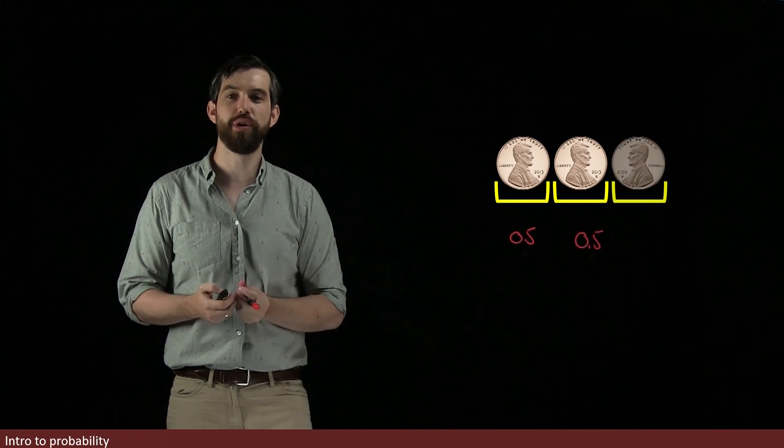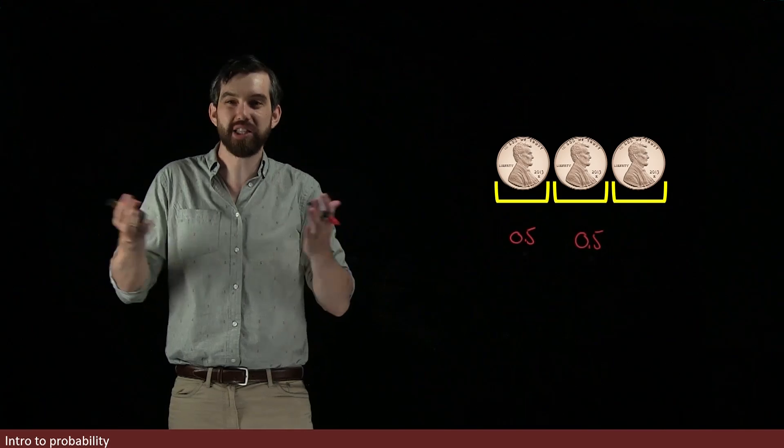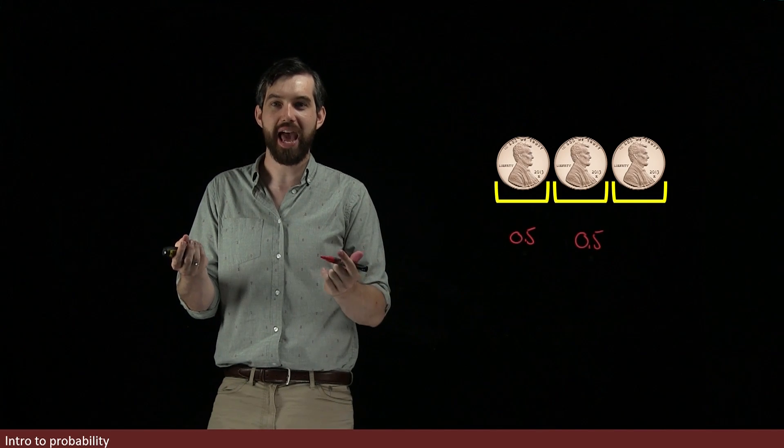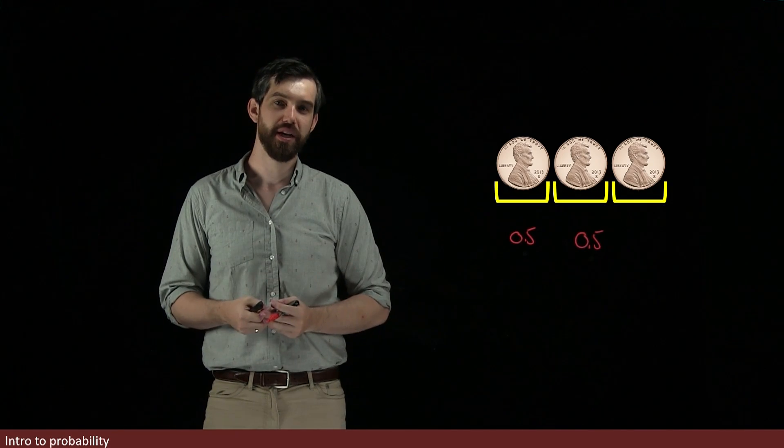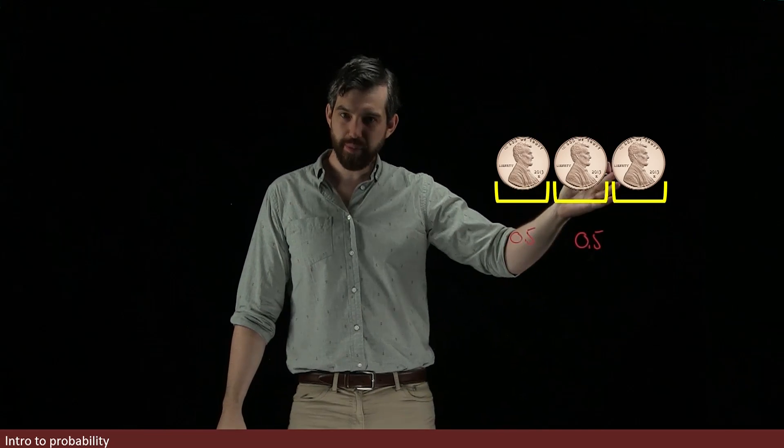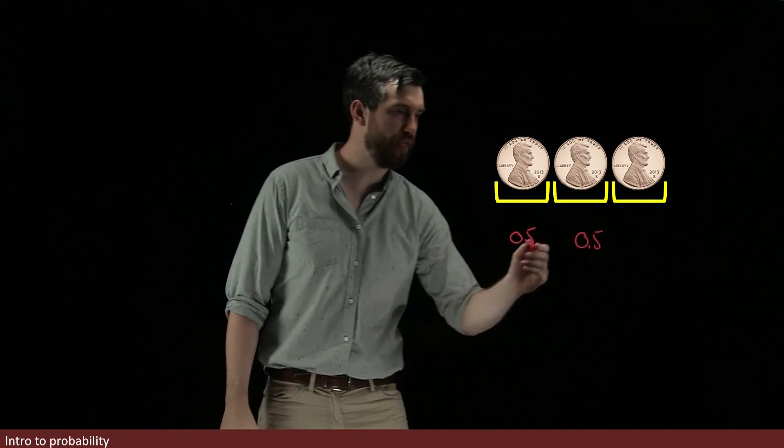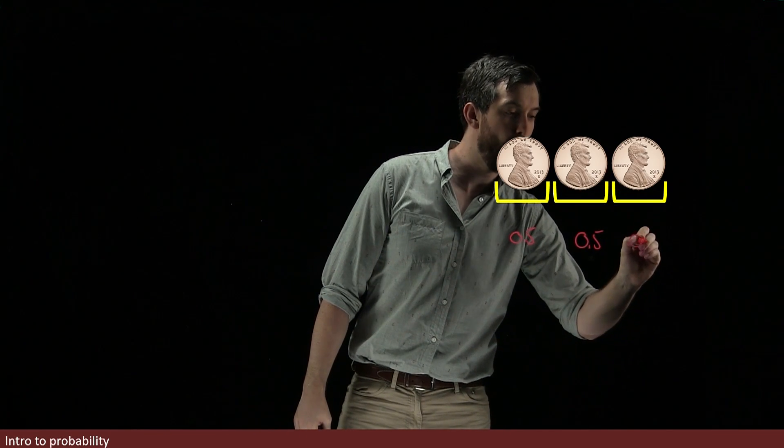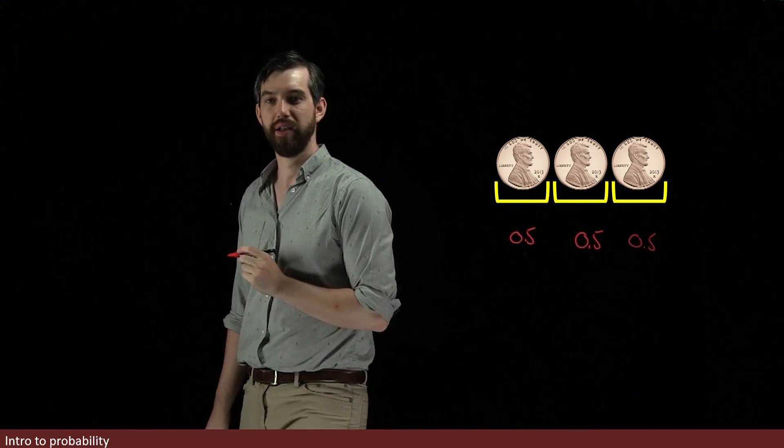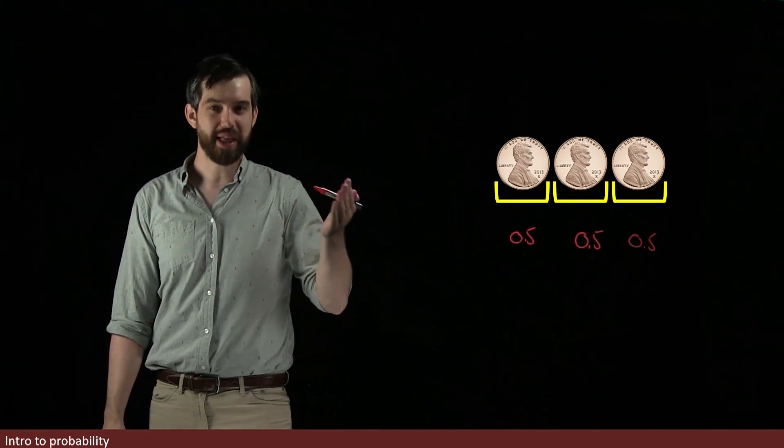So let's do this for one more coin. Let's go for what's the probability that I can have three coins in a row all being heads. Well, 50% for the first, 50% for the second, also 50% for the third. So I can come along and put one more 50% down there. And half times a half times a half is one eighth.